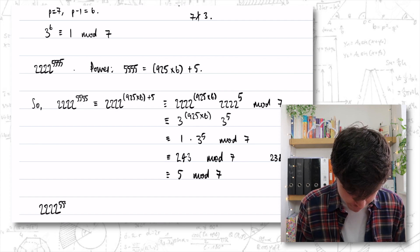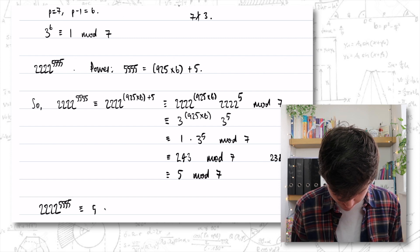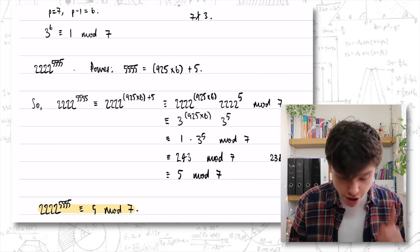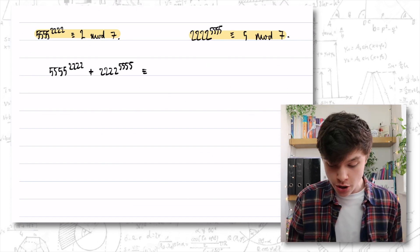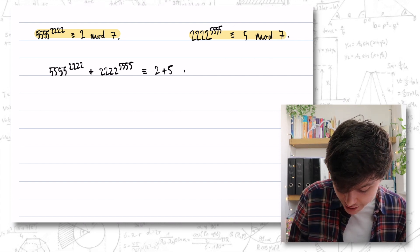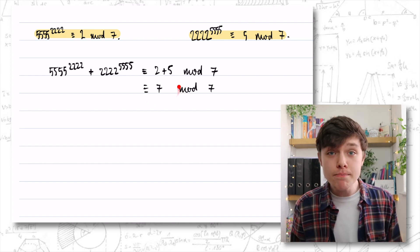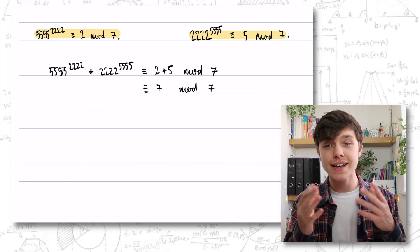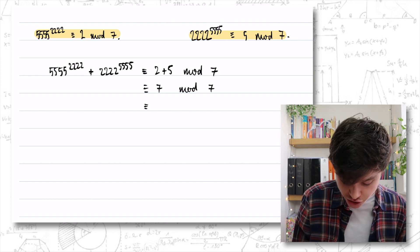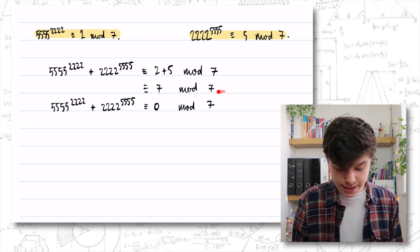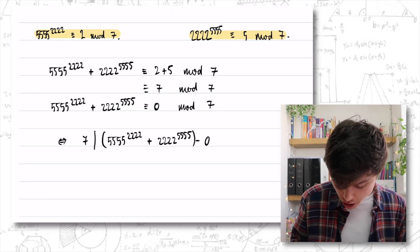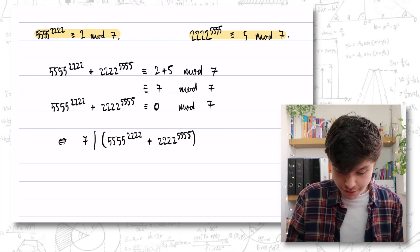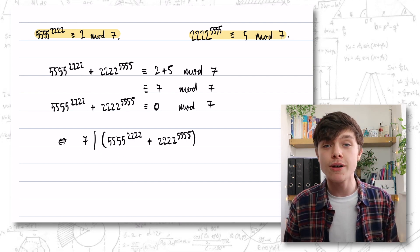So 2,222 to the 5,555 is congruent to 5 mod 7. Now we've got everything we need. The original statement adds the two terms together. Dealing with this modulo 7, we add the two results: 2 plus 5, mod 7. That is 7 mod 7, which is a multiple of 7. Taking one 7 off gives 0, so it's congruent to 0 mod 7. Going back to our original definition, this tells us that 7 divides the sum of the two original terms.